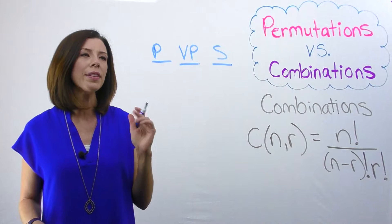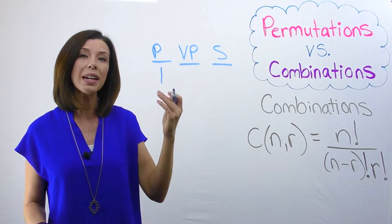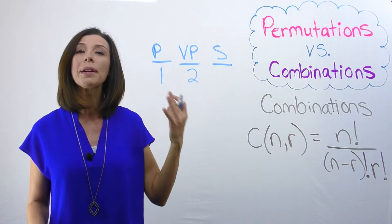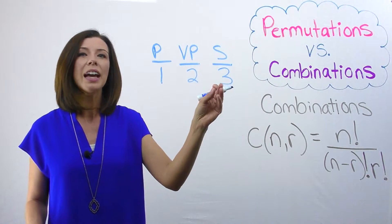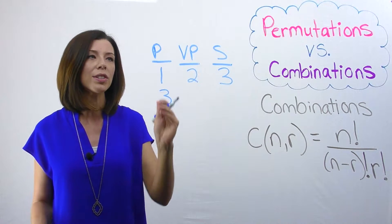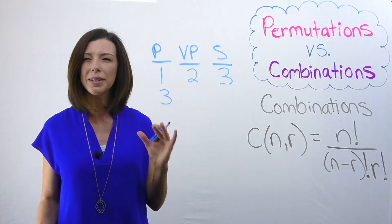The first person that I pick, if they're President, then I pick the second person and they're Vice President, then I pick the third person and they're Secretary. That's different than saying that if I pick the third person first, they'll be President. Does that make sense?